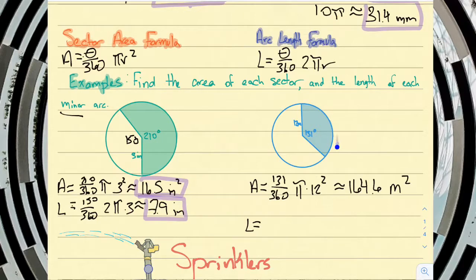Now, for arc length, luckily we are already looking at the minor arc, so we can take that 131 degrees just as is. 131 out of 360, multiply that by 2πr. So, 2 times π times 12. And our calculator will tell us what the total arc length is there, and it comes out to be 27.4 meters.